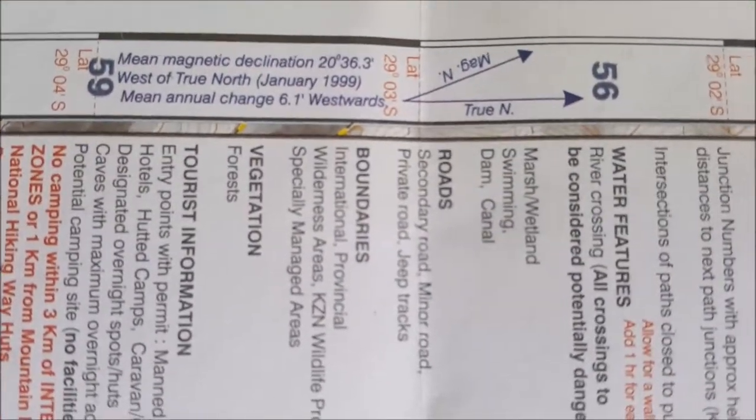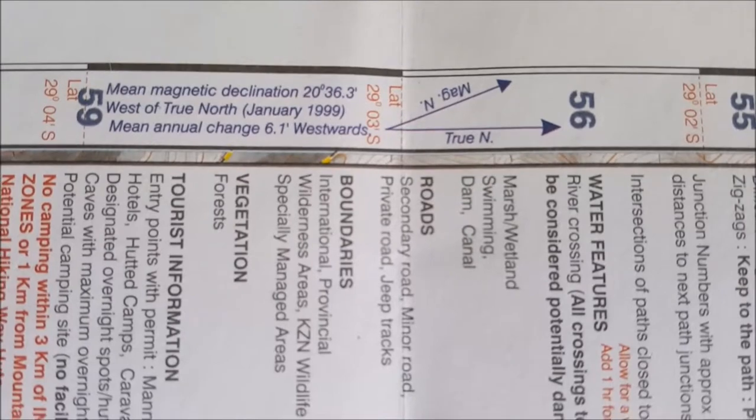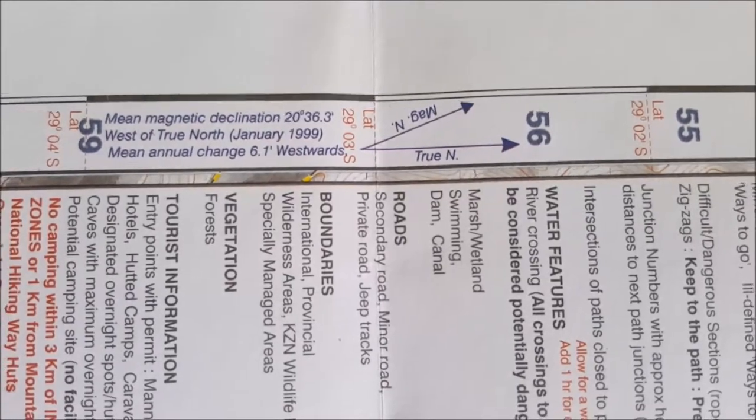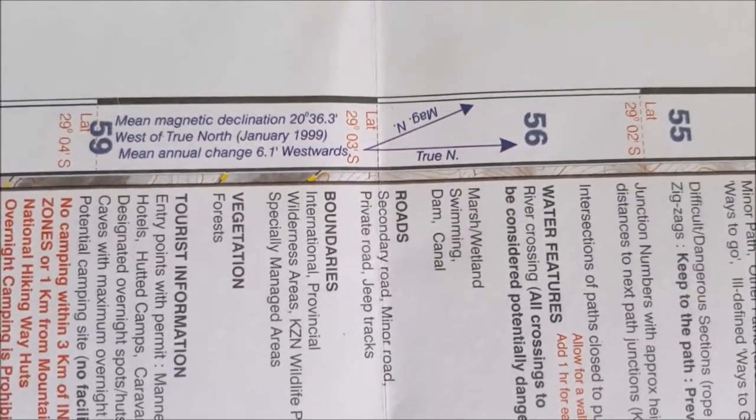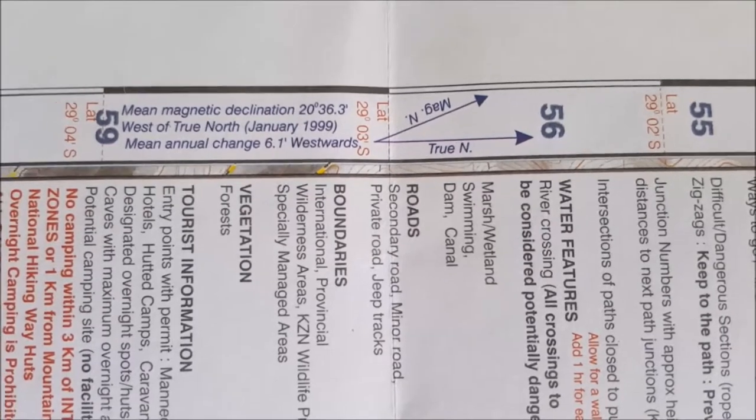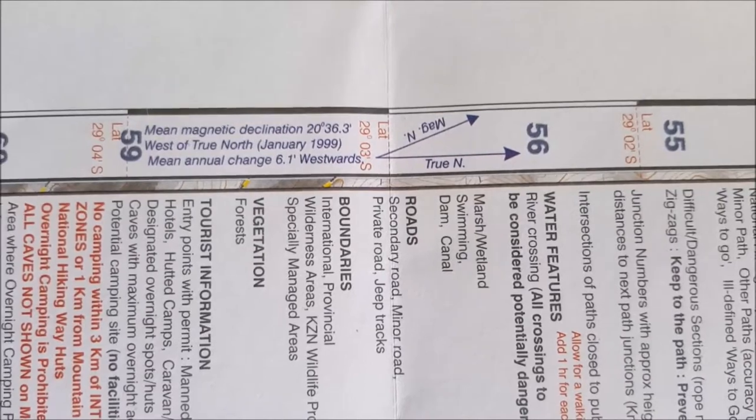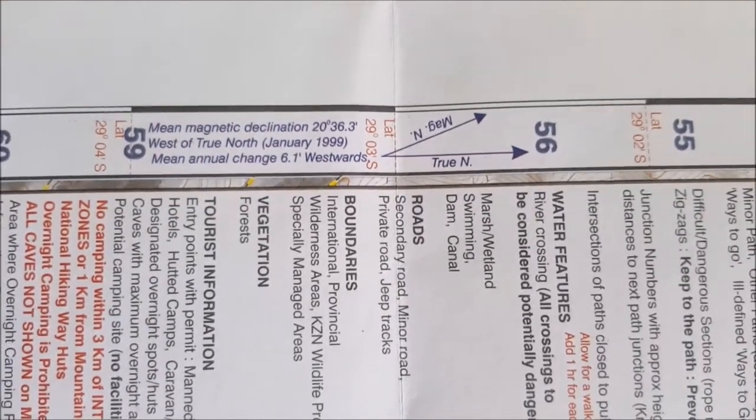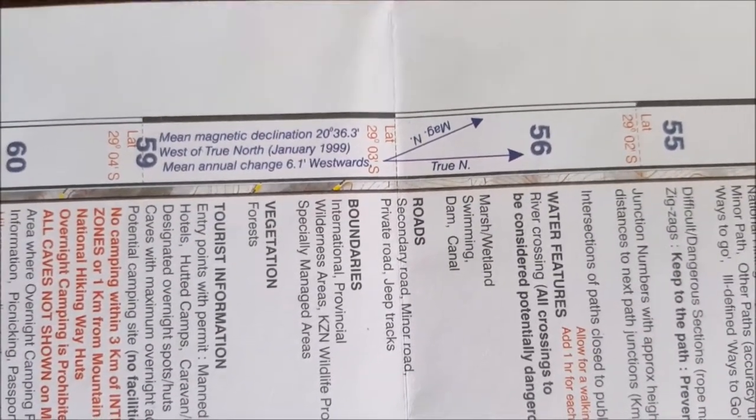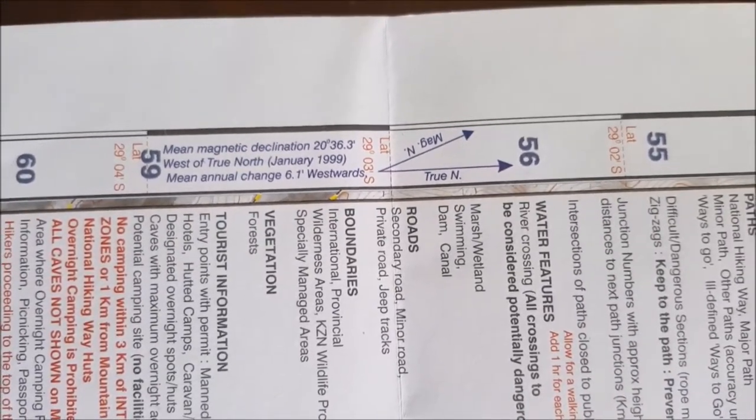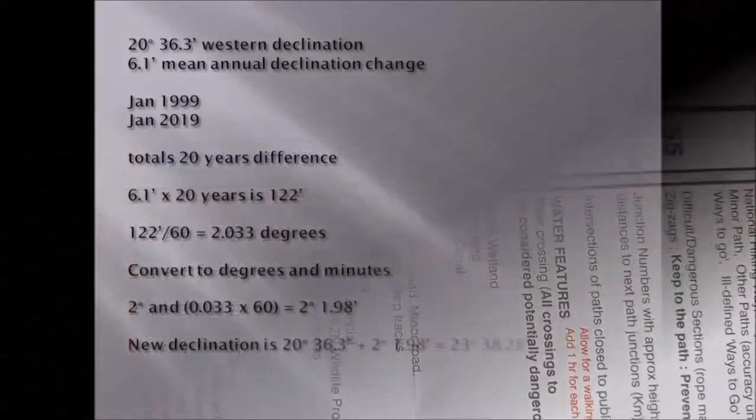We're interested in this video on declination. Here on the side of the map you can see they've got true north indicated by the arrow pointing directly up, and then you've got magnetic north which is deviating to the west of true north in this area. It says mean magnetic declination 20 degrees 36.3 minutes west of true north, January 1999, and the mean annual change is 6.1 minutes westward.